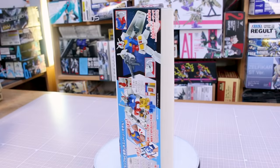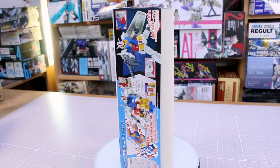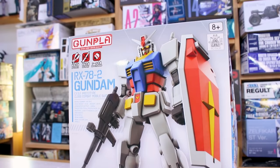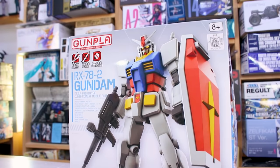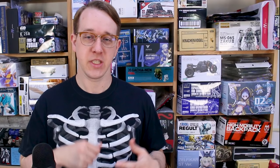The entry grade is a fantastic kit because it boasts some very impressive articulation and color separation for the price of just 500 or 700 yen for this. So it's a very cheap but wonderful model to work on and plus it's the iconic Gundam. So it's a perfect place to start for beginners.